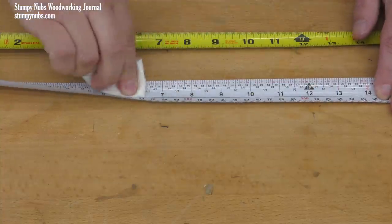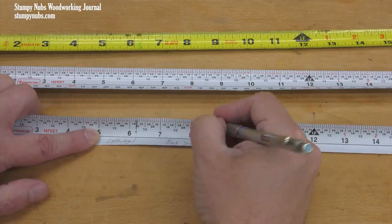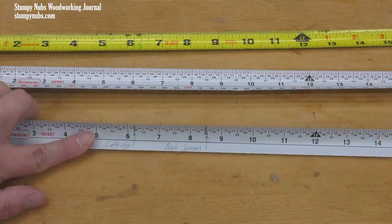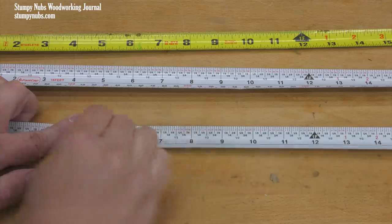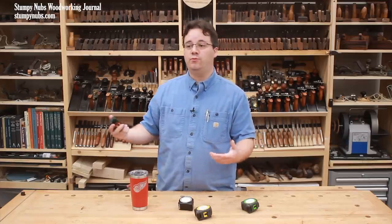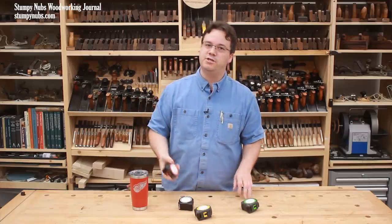You can do this on most of their tapes, but they also make a special story pole edition which has extra room for marks and notations. I love these and they're relatively inexpensive enough that you could just dedicate one tape to a project that you plan to build frequently, such as if you make a lot of Adirondack chairs. This is your Adirondack chair tape.